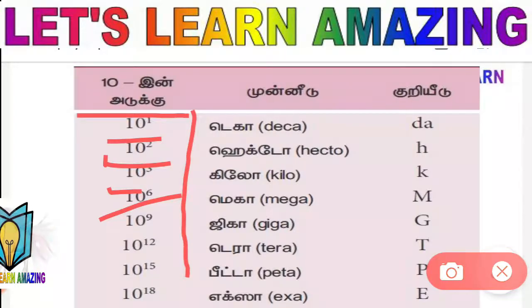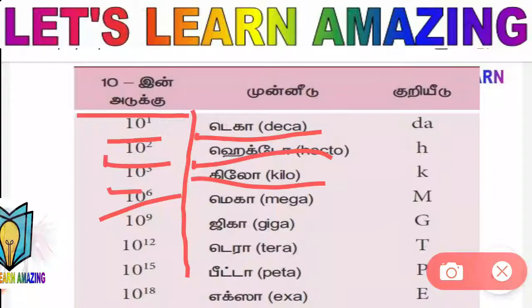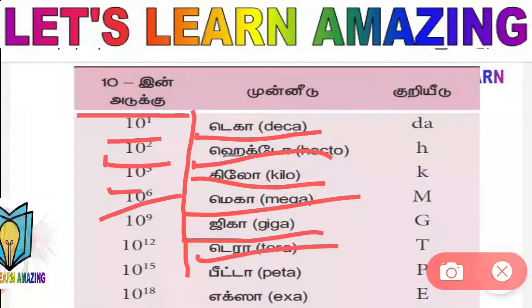A1 is increased. So the second one is: deca, hecto, kilo, mega, giga, tera, peta, exa.